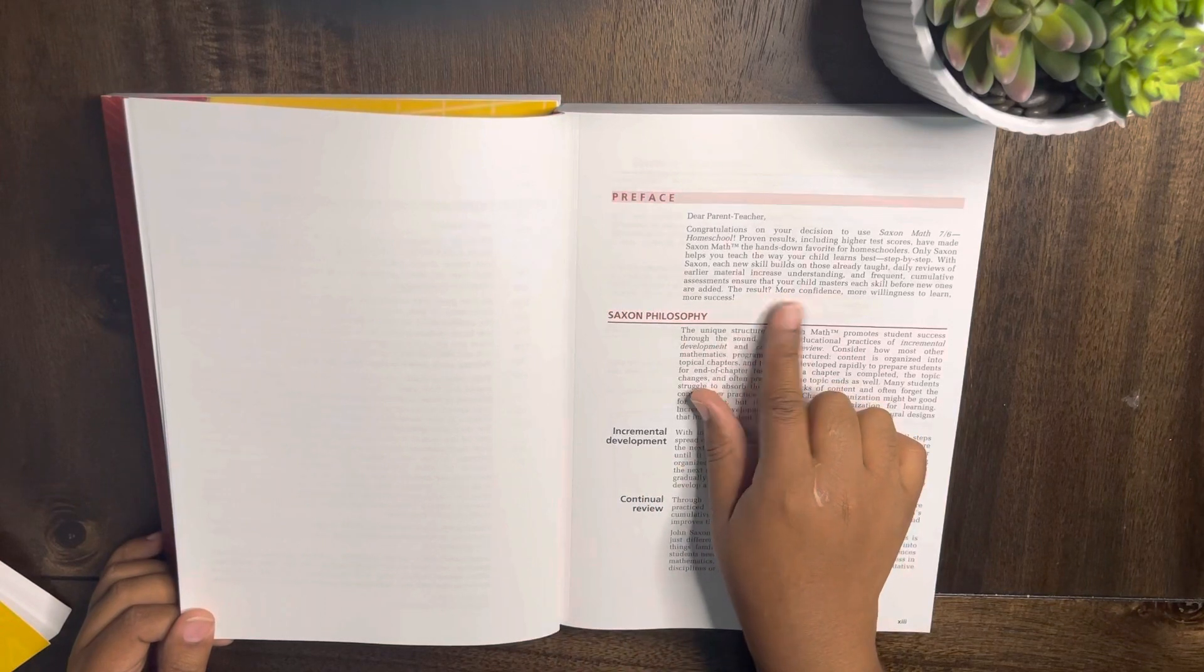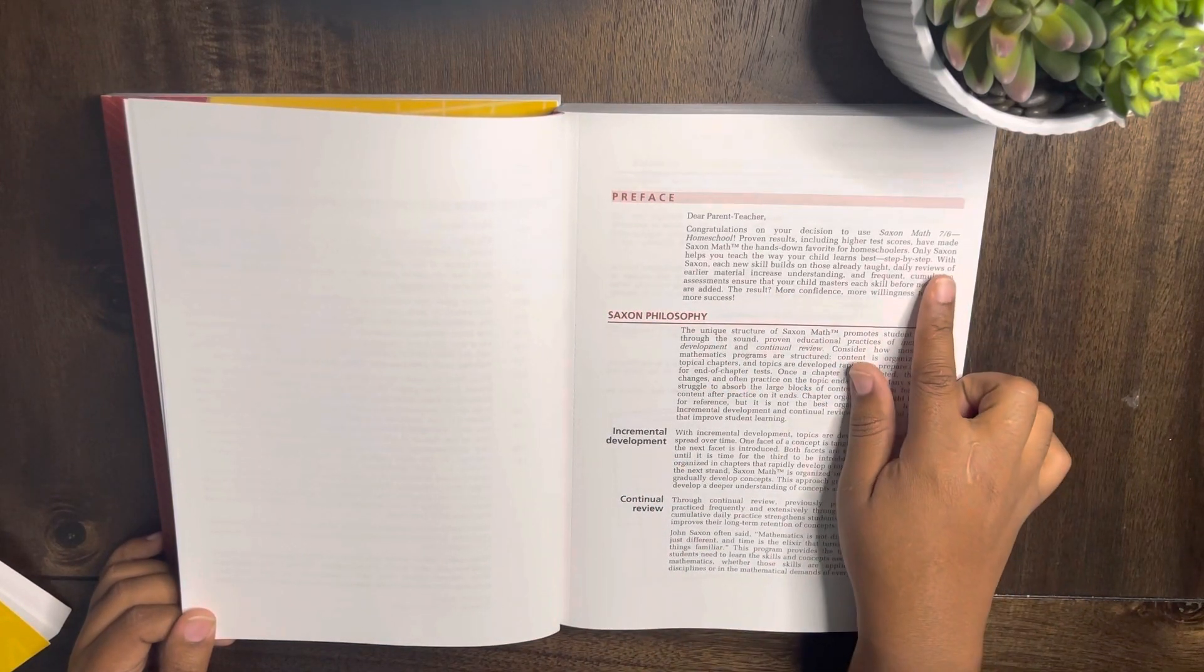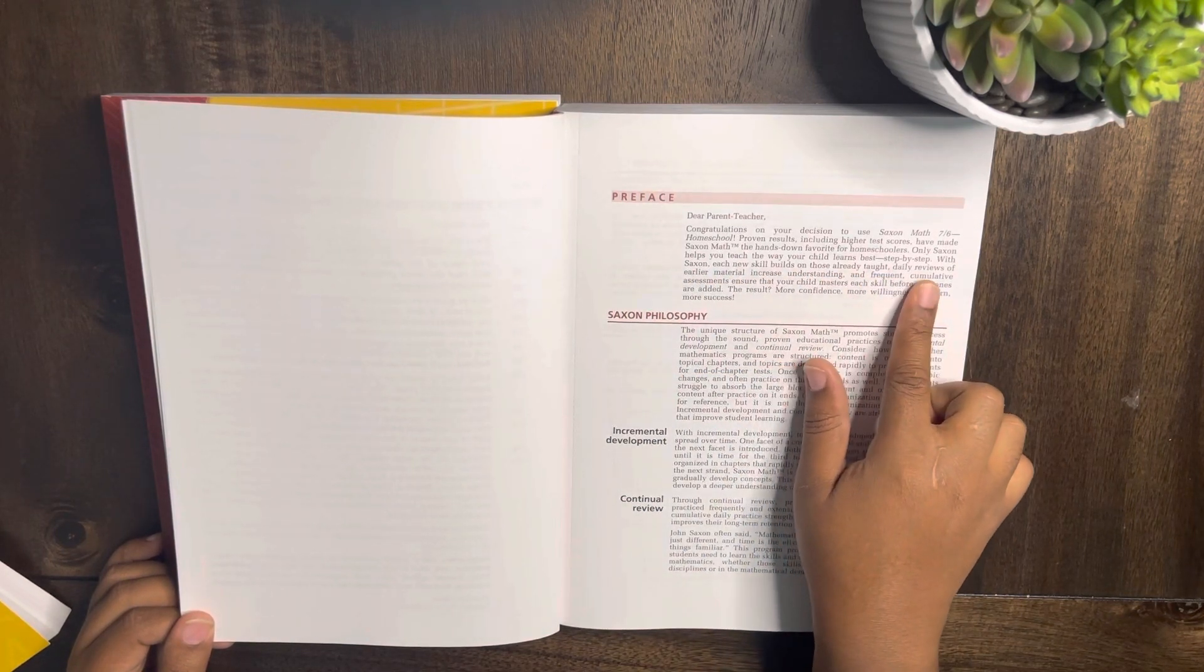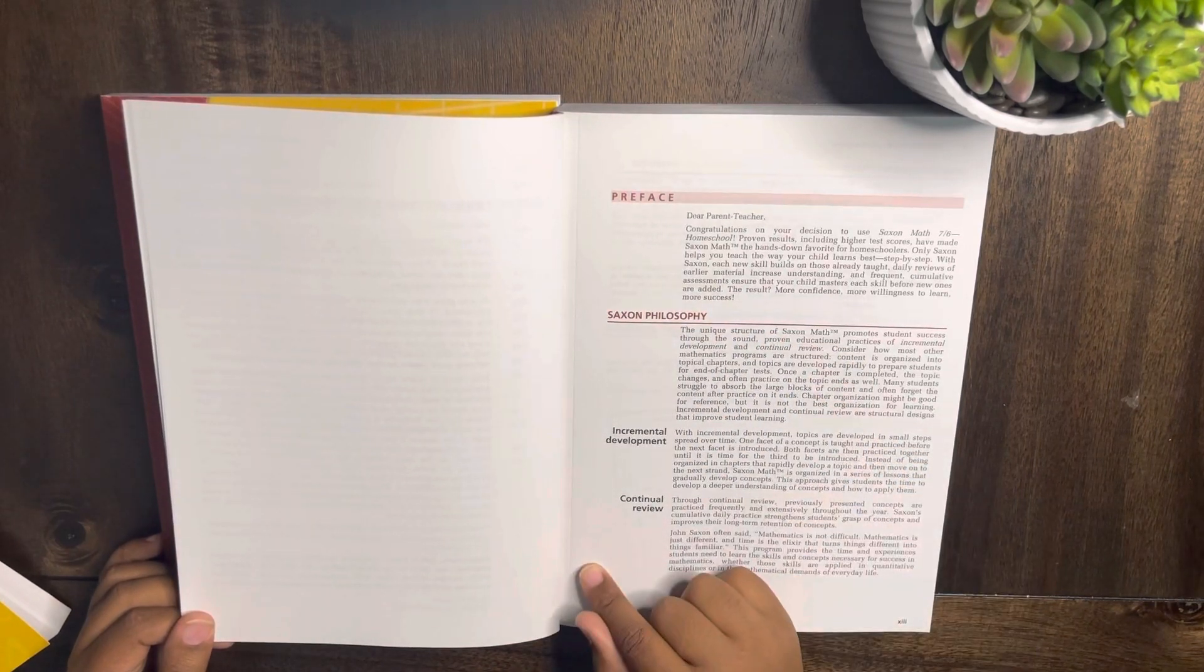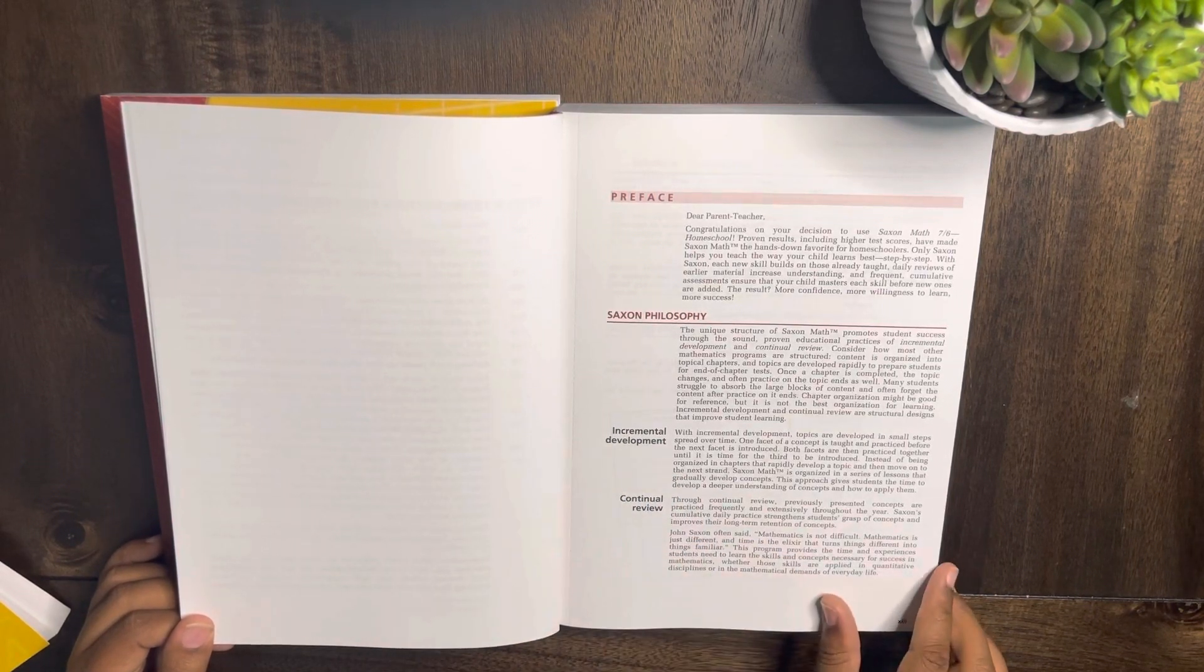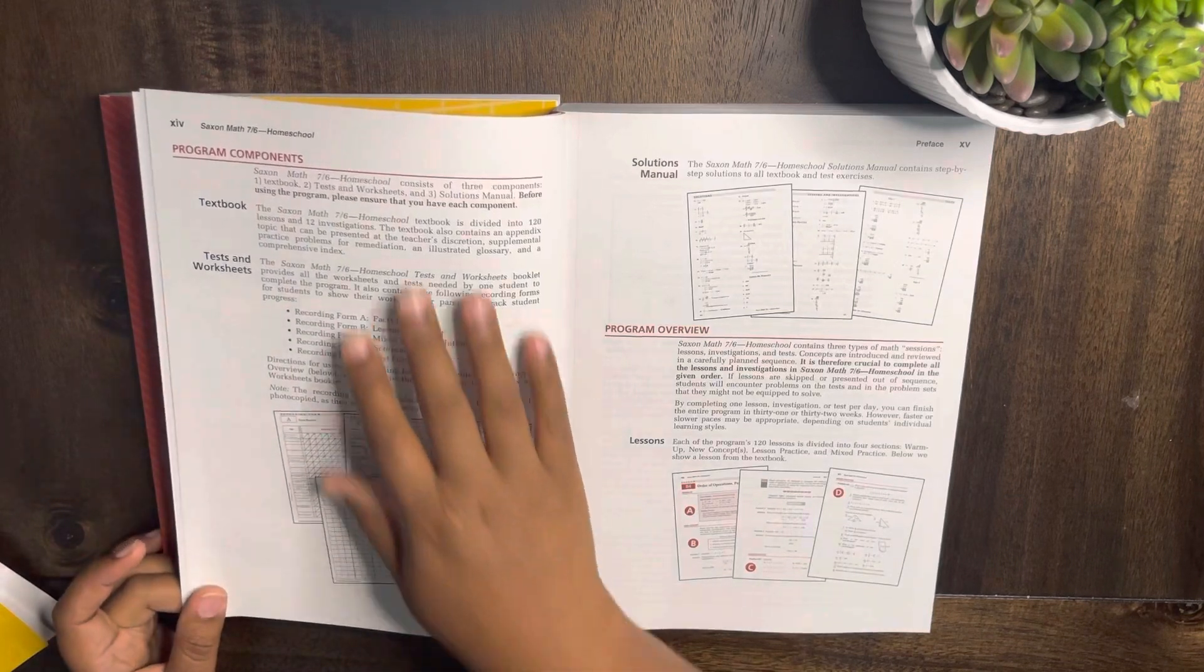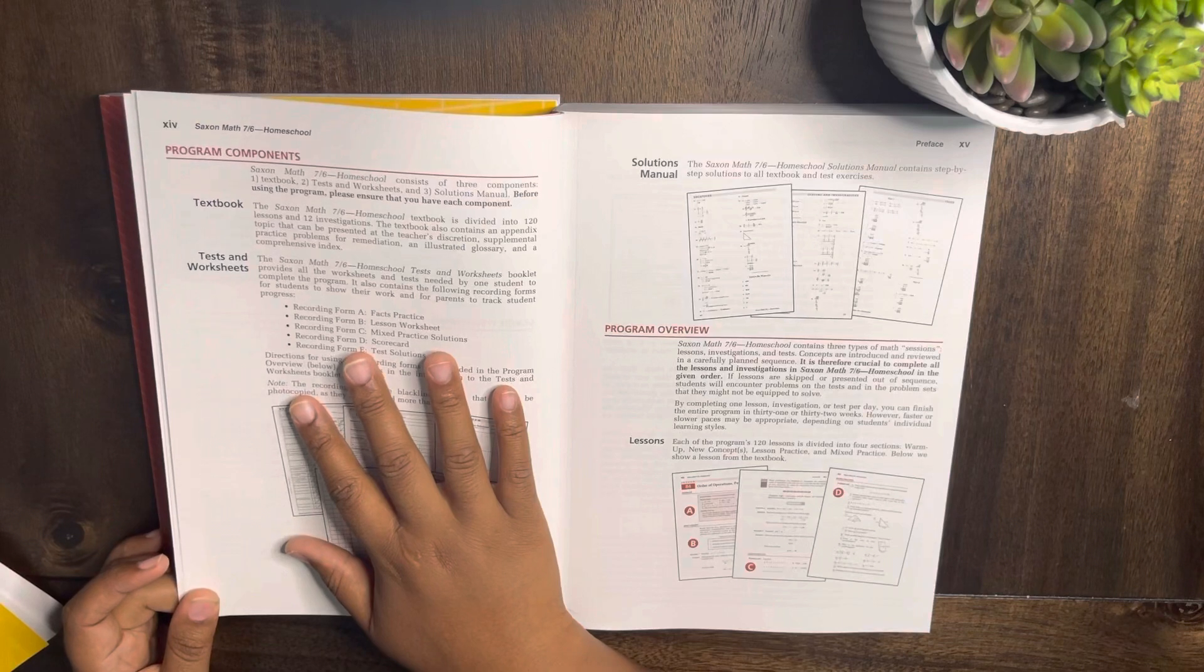It starts out telling you congratulations. Only Saxon helps you teach the way your child learns best, step by step. It tells their philosophy - basically how you're going to do your lesson: incremental development, continual review.